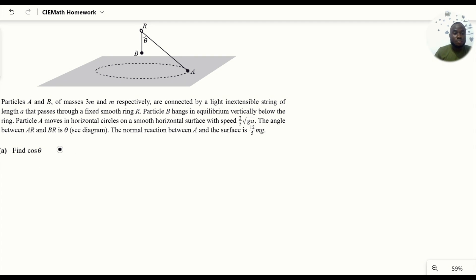If you consider the equilibrium of B, the tension in the string holding BR should be equal to the weight of B, which is mg. Since this string is inextensible and the ring is smooth, the tension in the string BR should be equal in magnitude to the tension in AR.